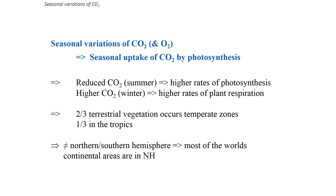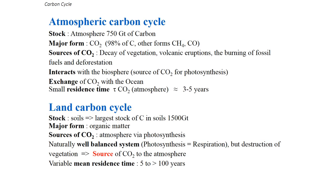To summarize: CO2 is reduced in summer and higher in winter because of the imbalance between photosynthesis and respiration, and there's a difference in magnitude between the northern and southern hemispheres because of the different distribution of land masses. There's also a table of carbon stocks across the different reservoirs that you can go through in your own time.